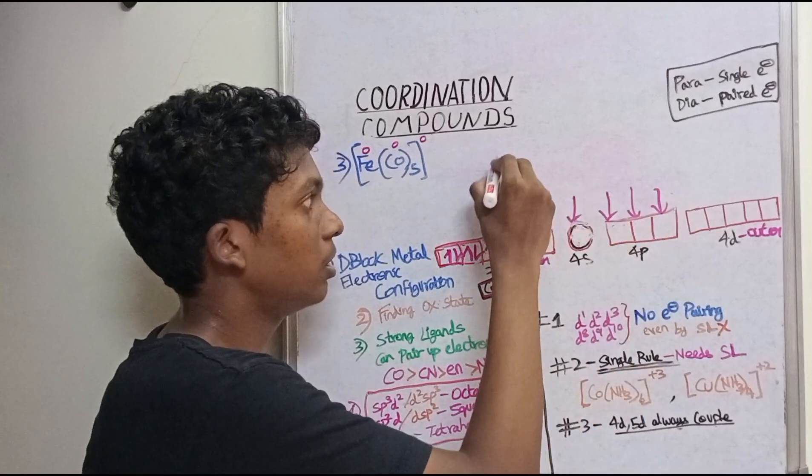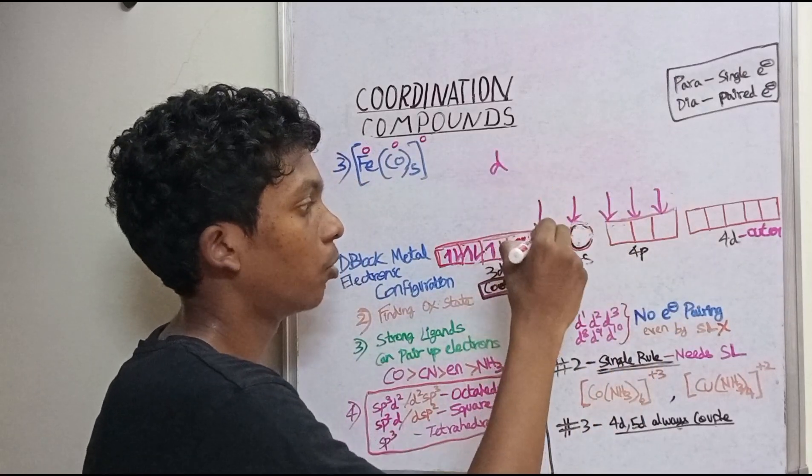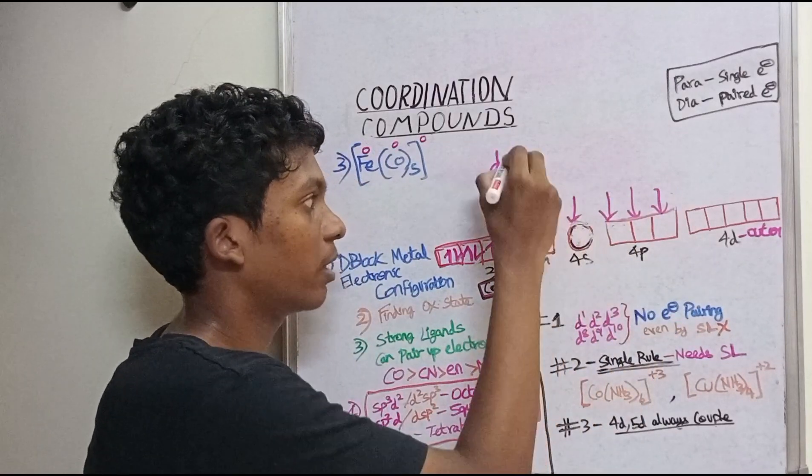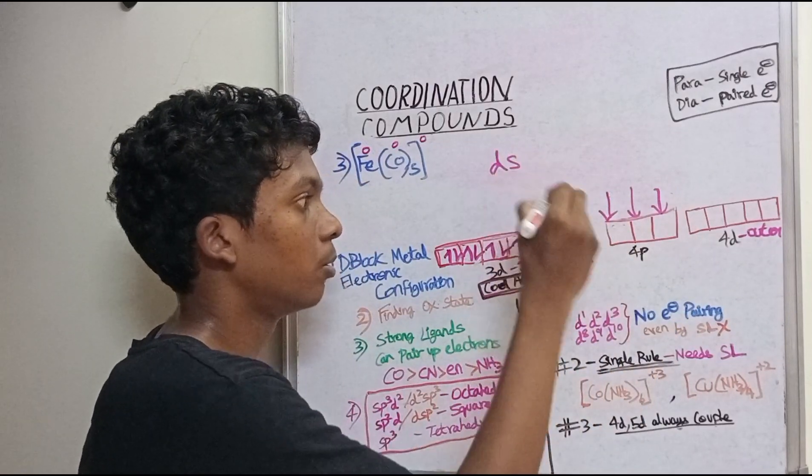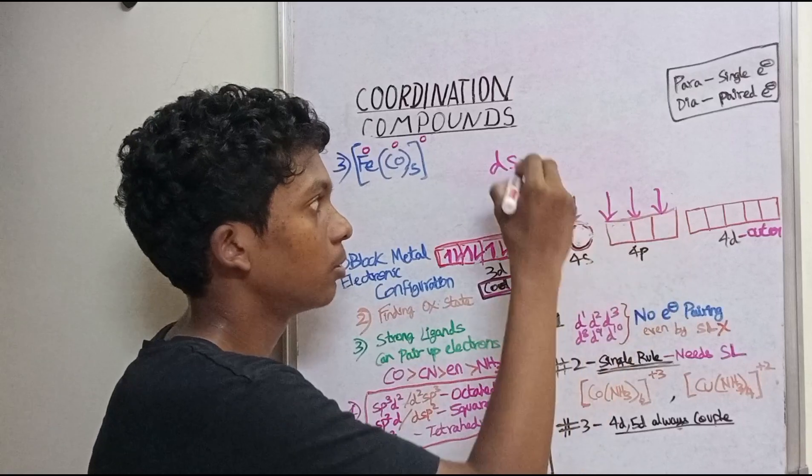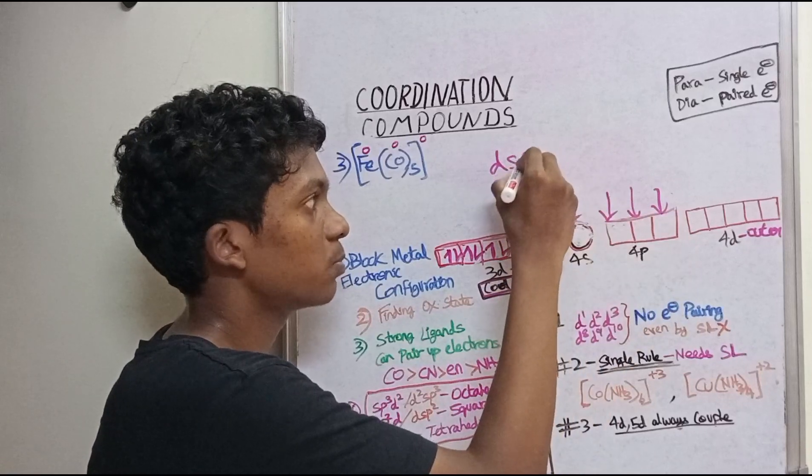The hybridization is 1 d-orbital, 1 s-orbital, and 3 p-orbitals, giving dsp³.